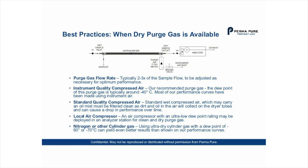We want to start with best practices concerning times when dry purge gas is available. All of our performance curves have been generated using minus 40 degrees C dew point instrument air. This is a typical specification for dried compressed air found in chemical process plants, refineries, and laboratories where compressed air is available. That is not always the case, but it is the most common way to test the performance of the dryer, which is why we use it in our literature.